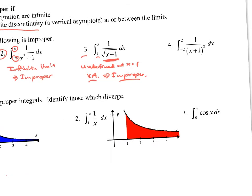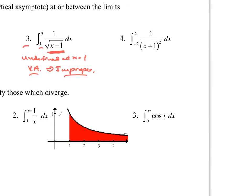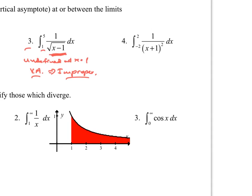Looking at number four — this is a little different, but it is undefined at x = -1. Is that in between these two limits? The answer is yes. So we have a vertical asymptote in between the two limits, and this would also be improper.